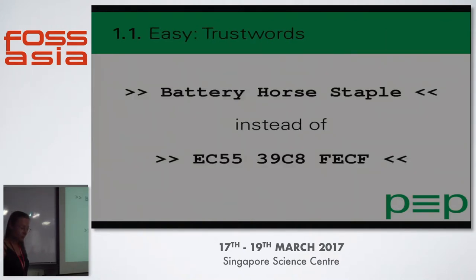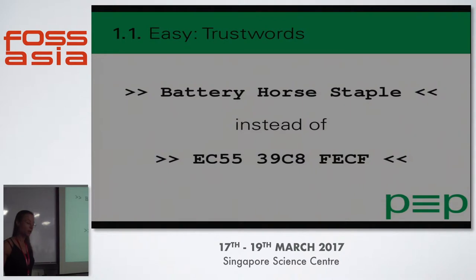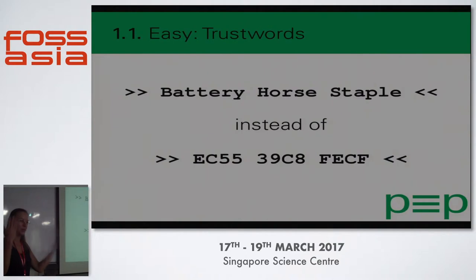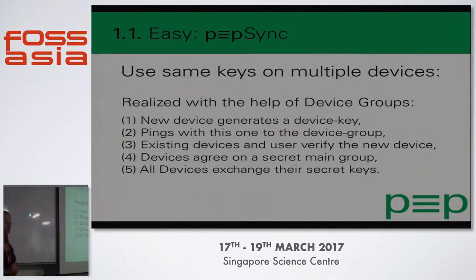One sub-part of the easy concept is the trust words system. Instead of hexadecimal-based fingerprints that you have to read aloud on the phone, we transfer them into words — like 'battery horse staple' instead of 'EC5539C8FECF.' Reading out ten words is much nicer than reading out fingerprints. This is the only part that still needs user involvement — and it doesn't even have to be done. Establishing trust is something only humans can do by looking into eyes or listening to voices.